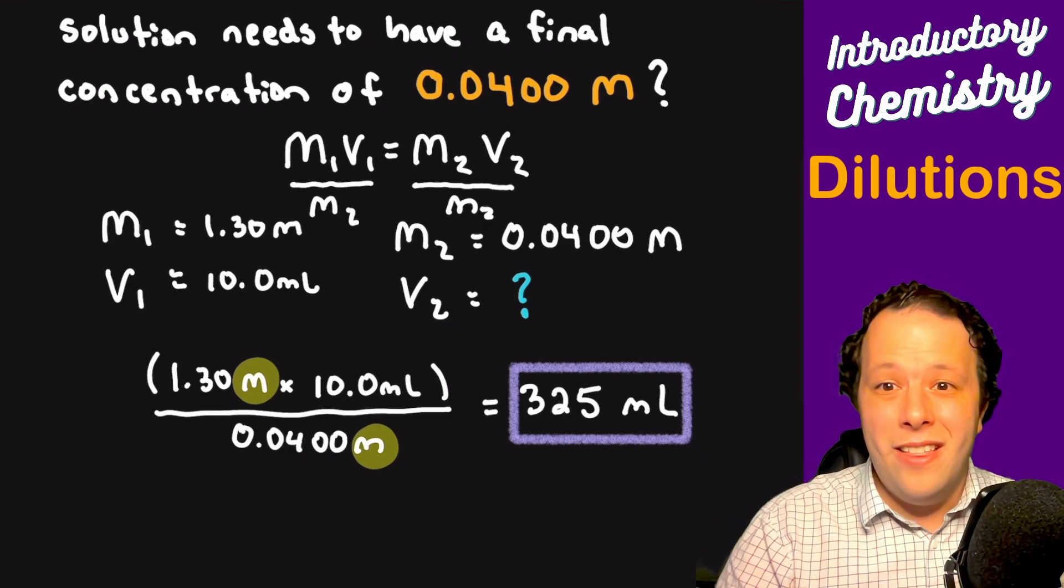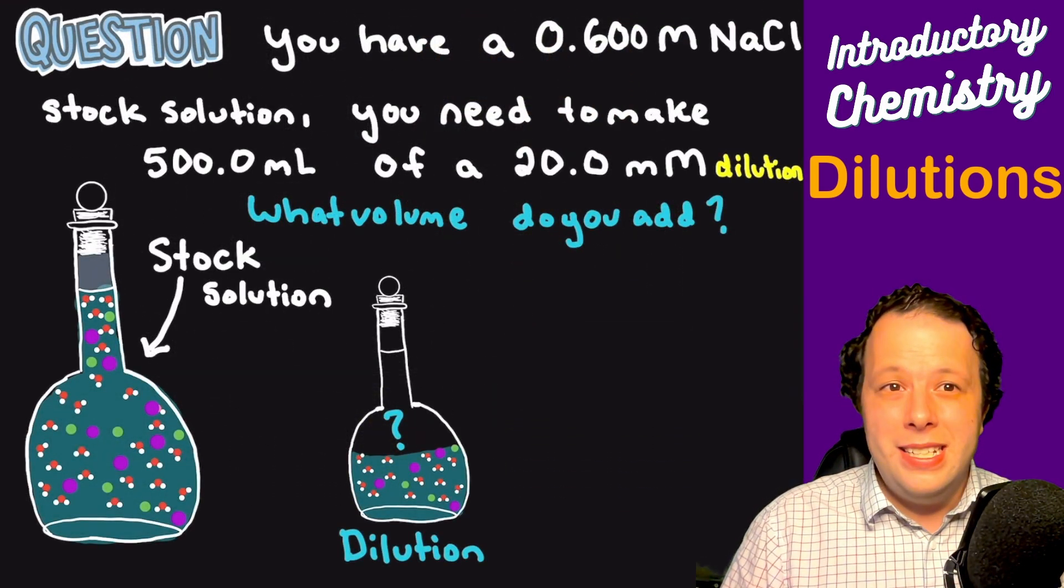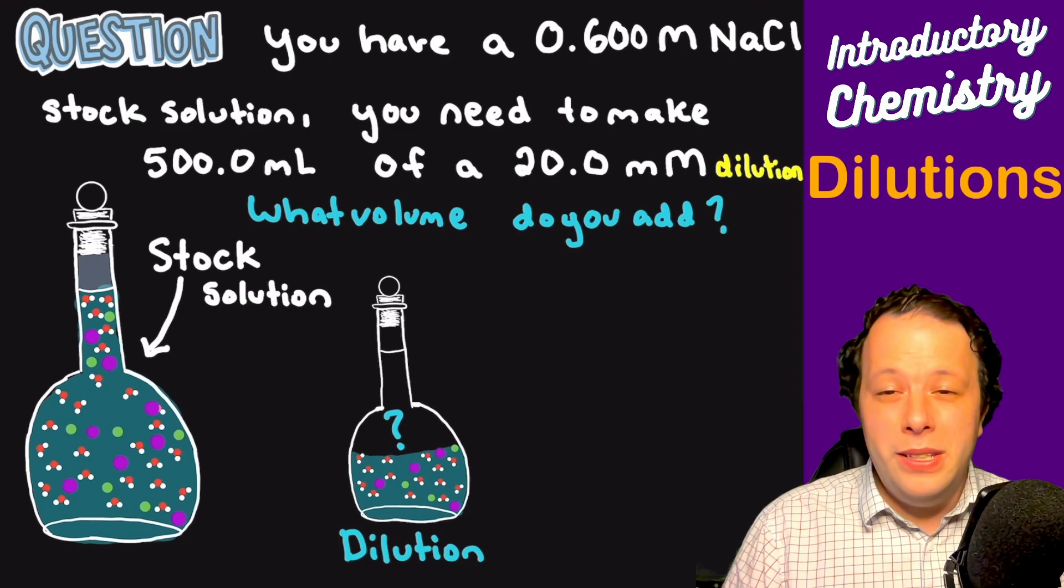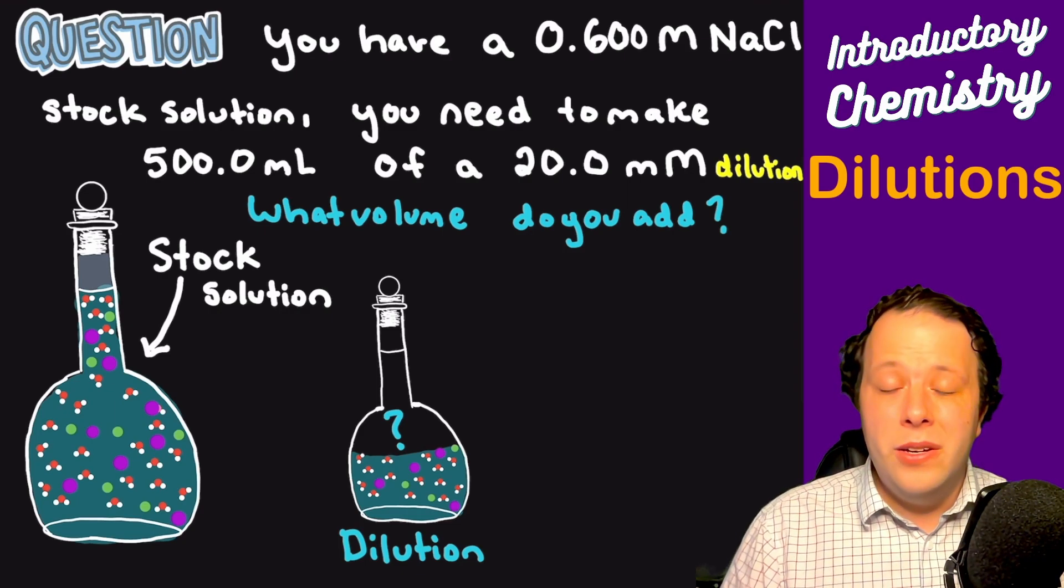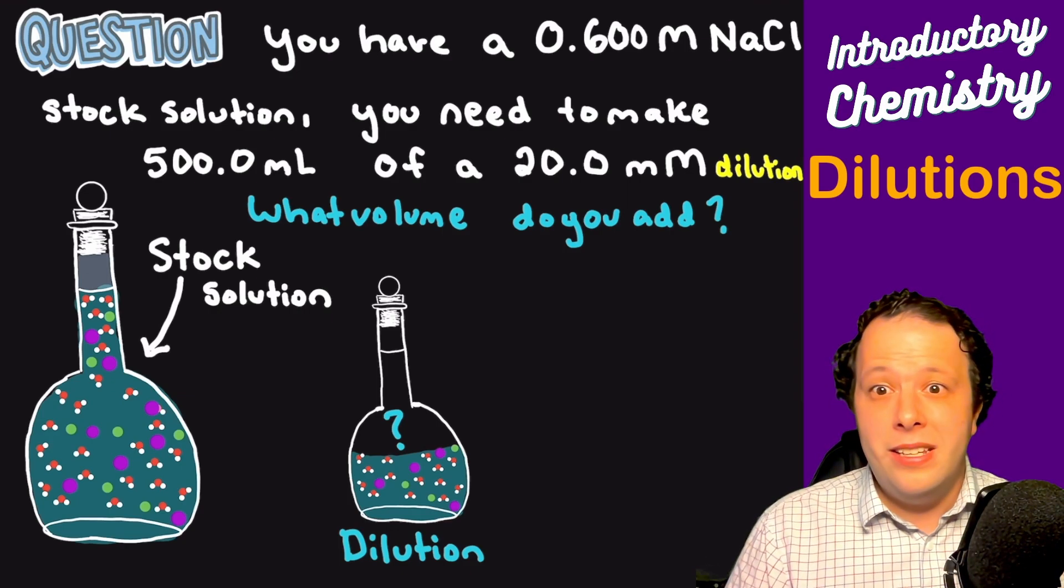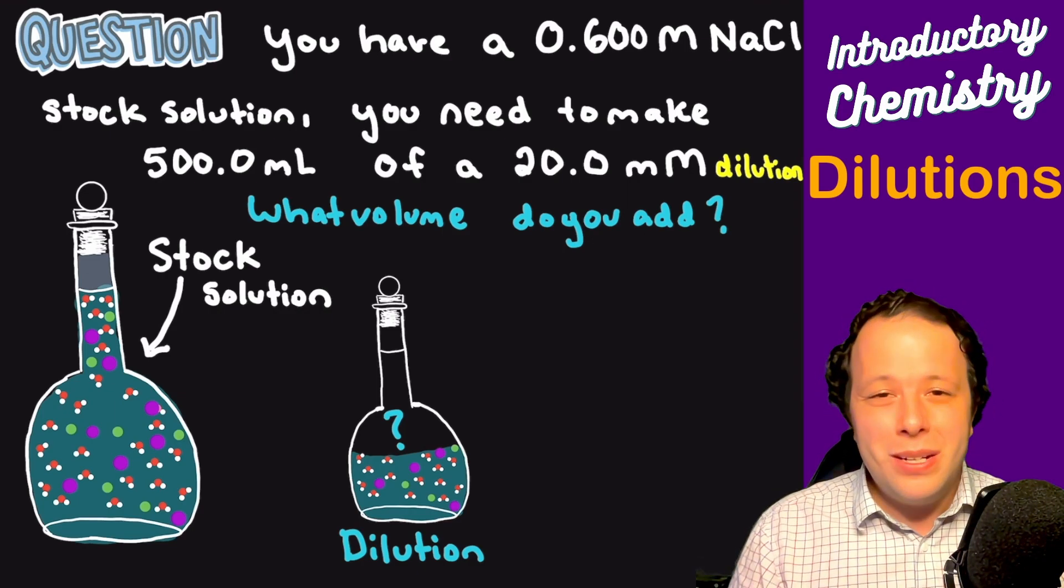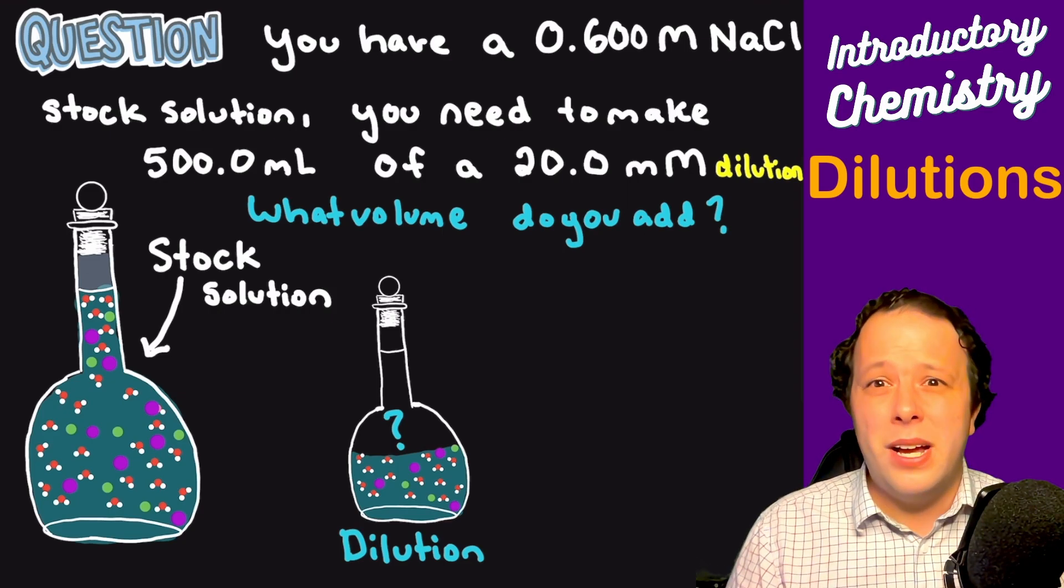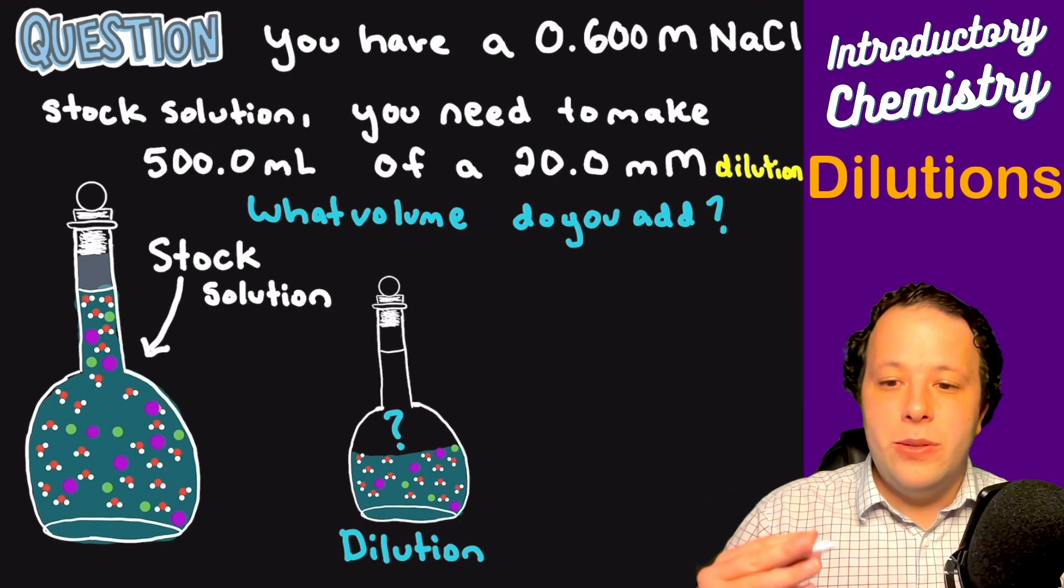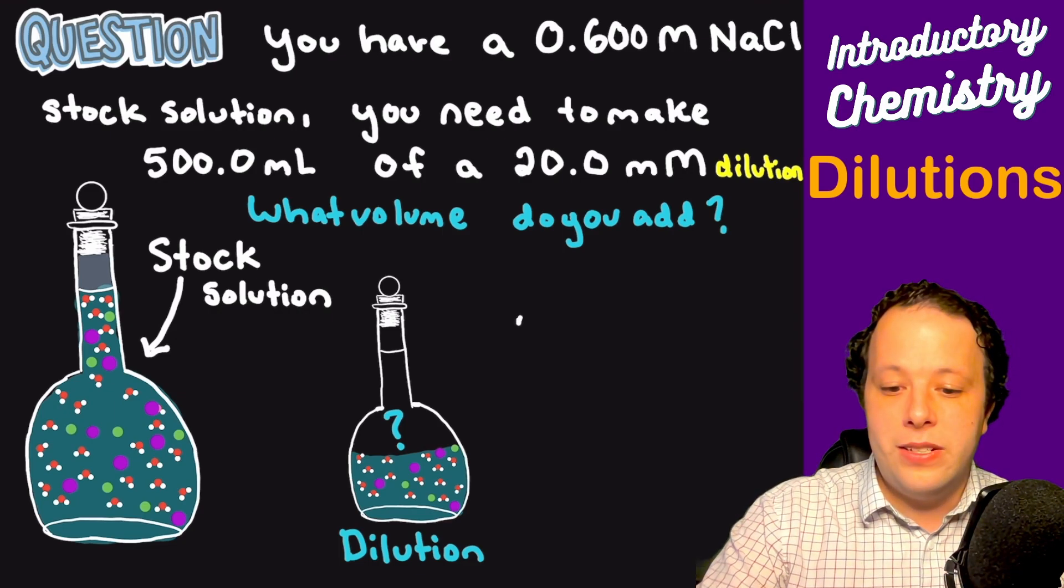Let's take a look at another problem. You have 0.600 molar NaCl stock solution. You need to make 500 milliliters of a 20 millimolar dilution. What volumes do you add? Sometimes you might be told when you walk into a lab that you need to make this, and it's not always given to you, which is sometimes really scary, especially the first time. Once again, we're going to write down everything that we have. So that's M1: 0.600 molar.